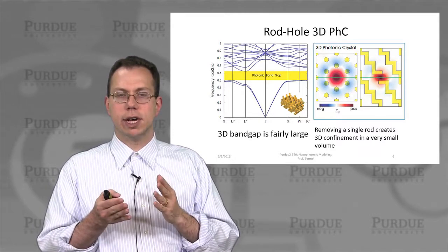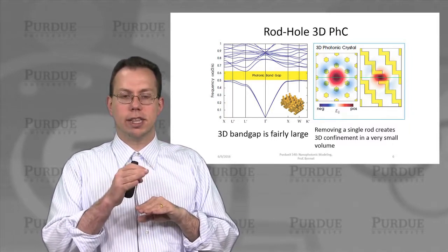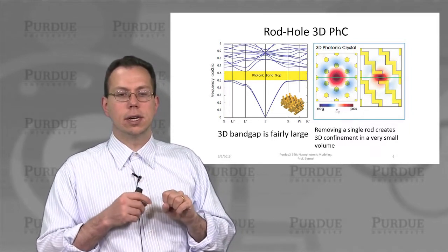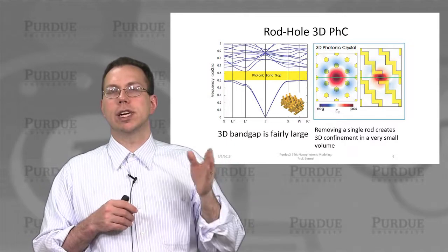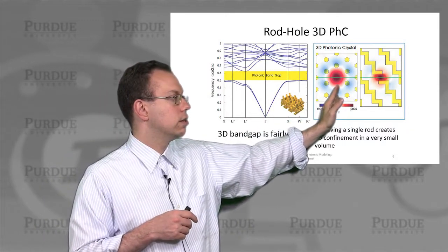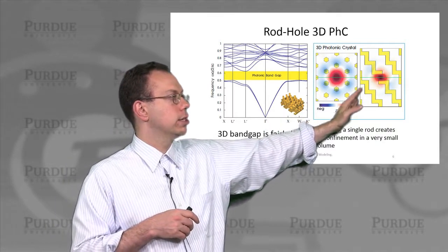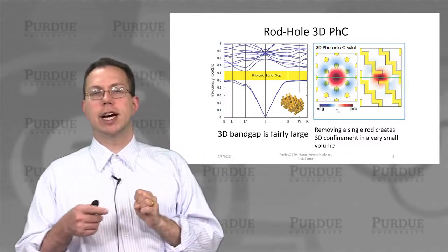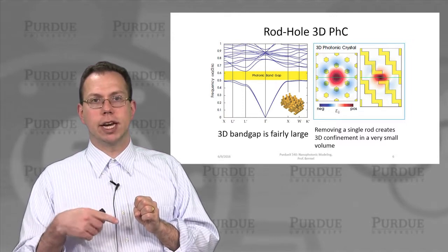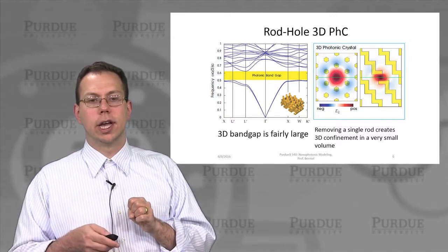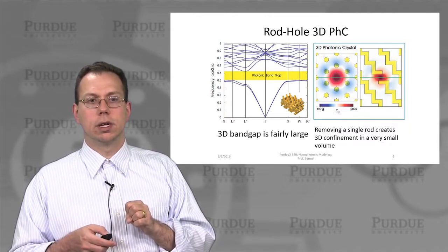We can also create 3D photonic crystals from composites of different 2D structures stacked layer by layer. These have true 3D photonic bandgaps in all possible directions and polarizations. We found that confinement is achievable not just laterally but also vertically, even without high-index materials — enabling true 3D confinement with very high quality factor and very low mode volume.